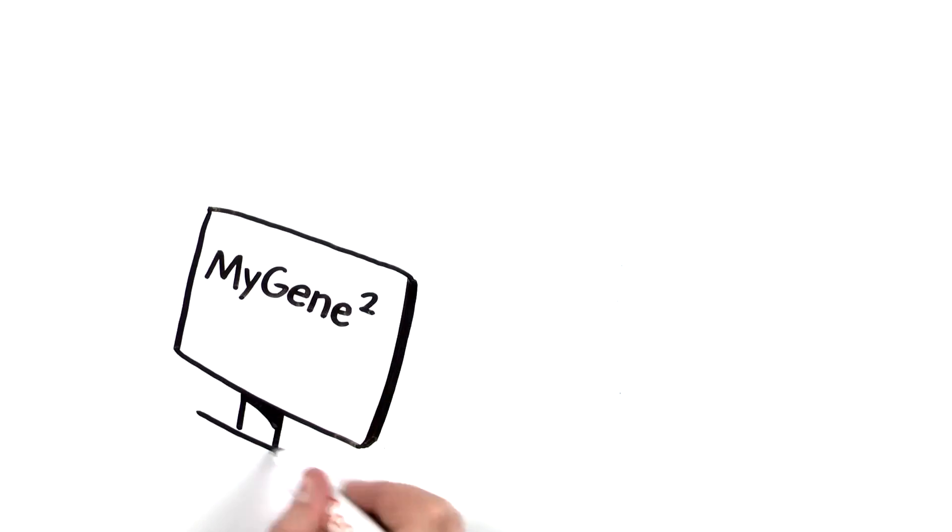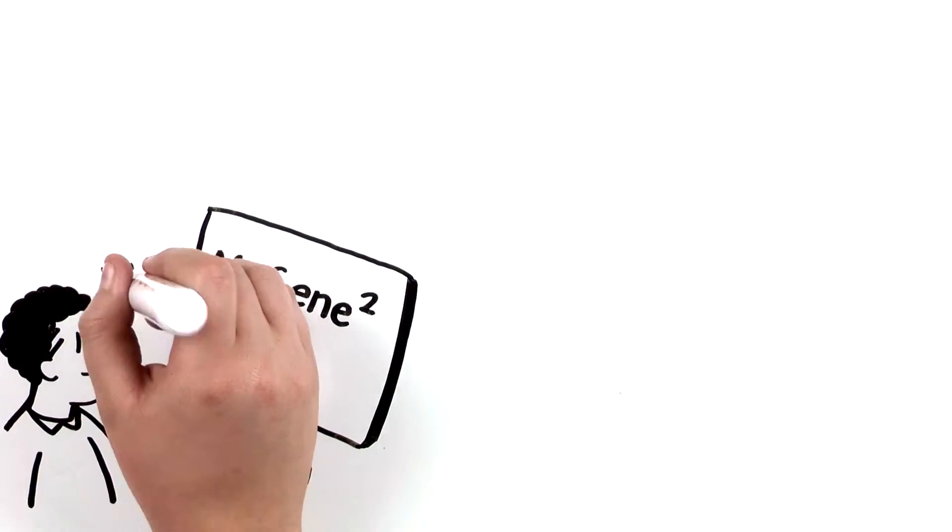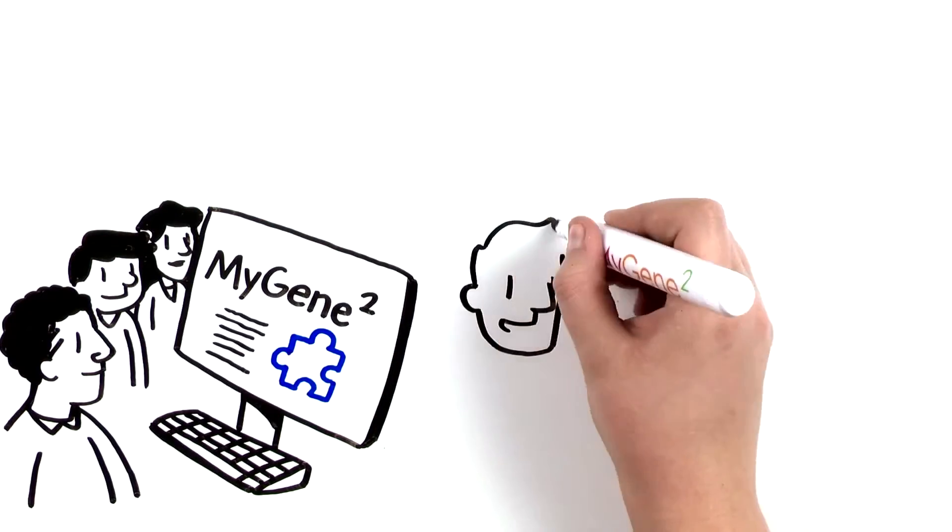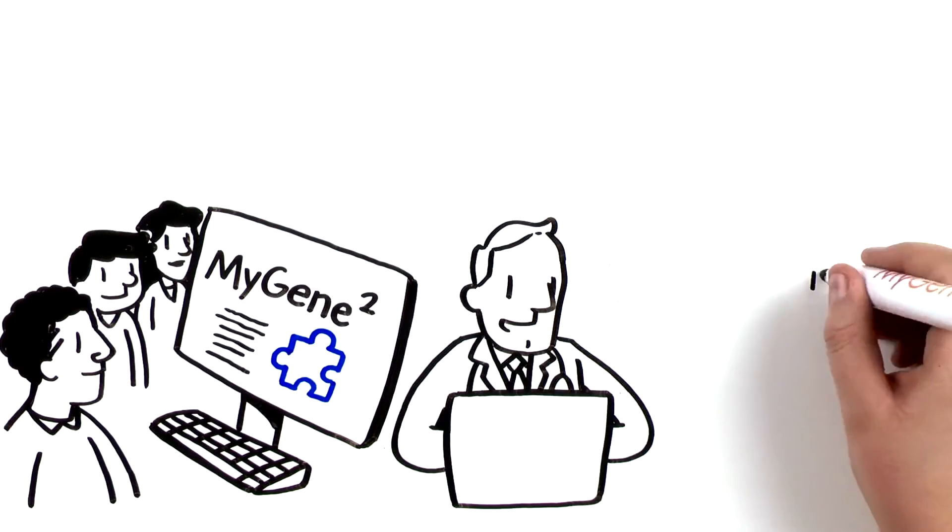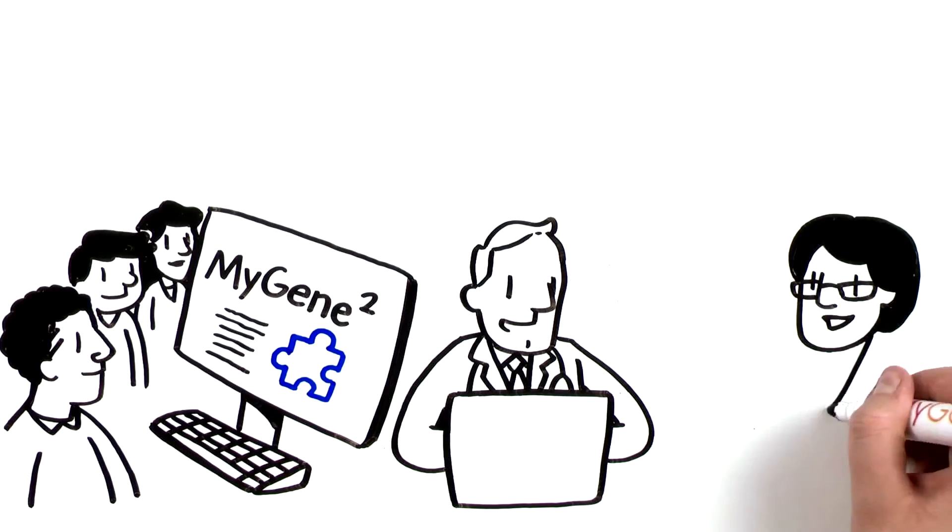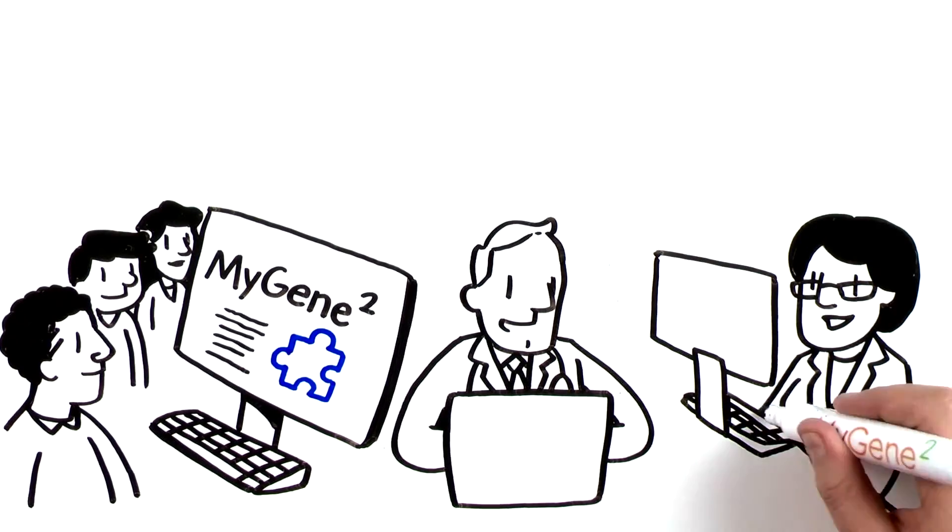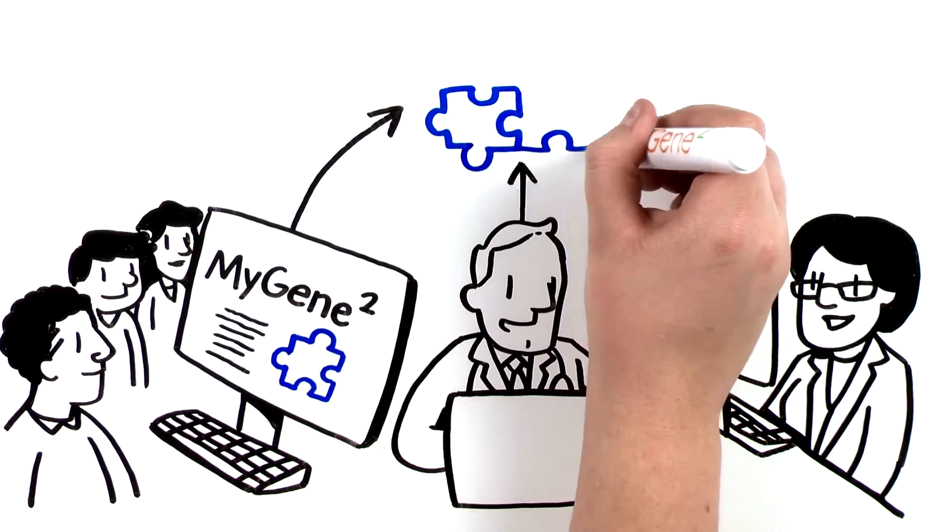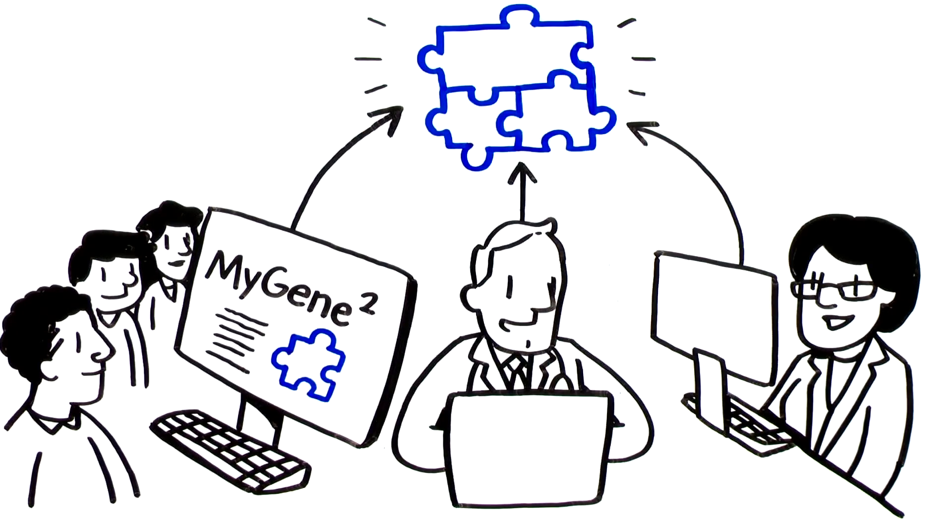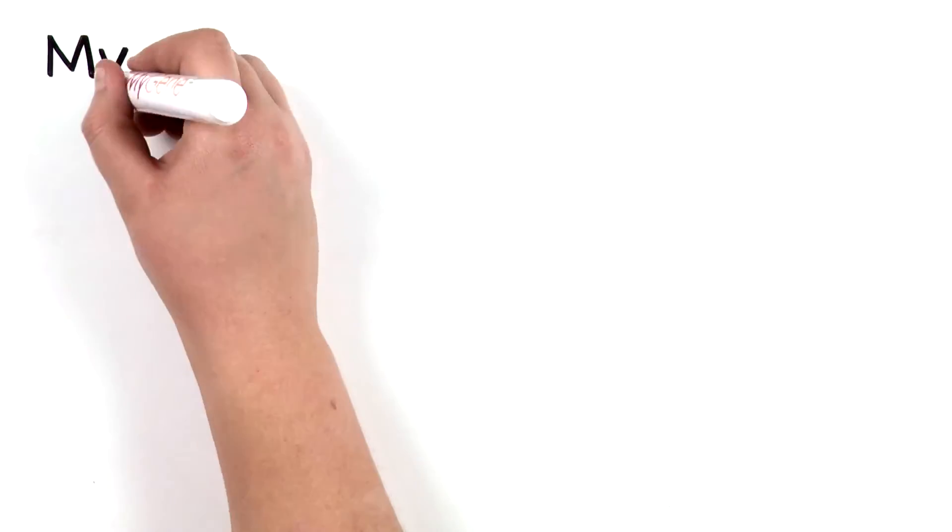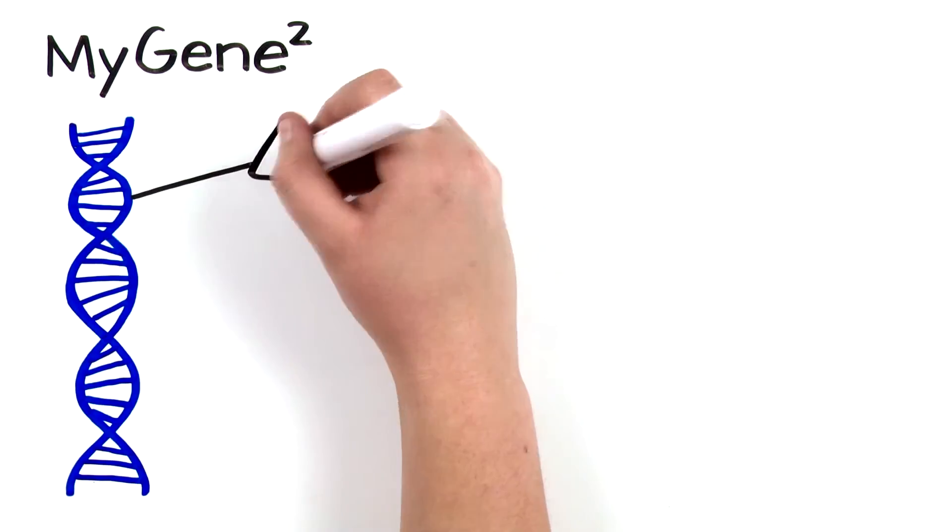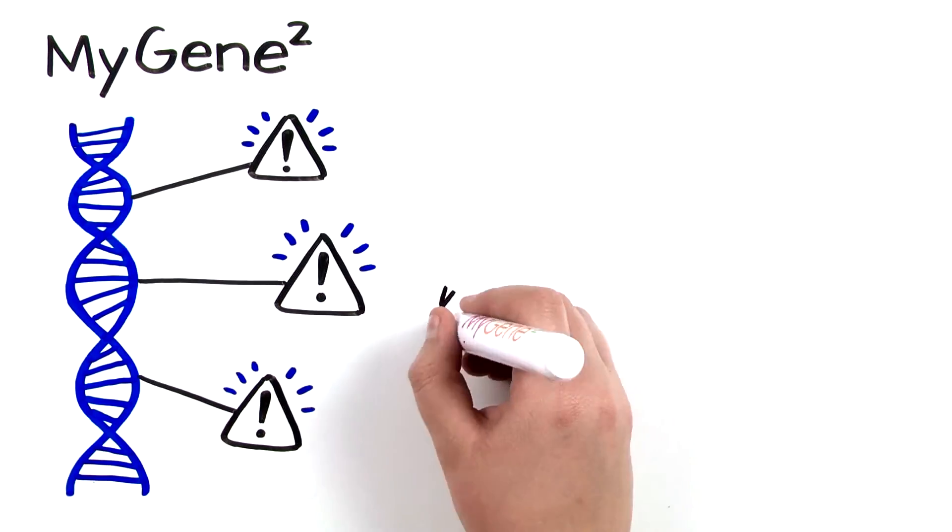MyGene2 makes it easy for families with rare conditions to publicly share health and genetic data. Doctors and researchers can also publicly share de-identified data on behalf of patients and research participants. These data are then compared in MyGene2 to spot potential discoveries. MyGene2 also creates a public report summarizing the health problems caused by each mutation.